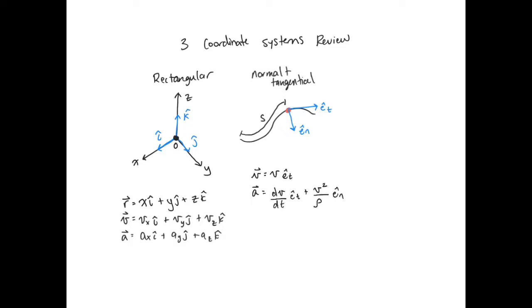When you're looking at normal and tangential components, especially for the acceleration, you end up with one component that's capturing the speed change — so is the car accelerating or not? — and then another component that's capturing the radius of curvature and the acceleration due to the specific curvature that the particle is moving along.